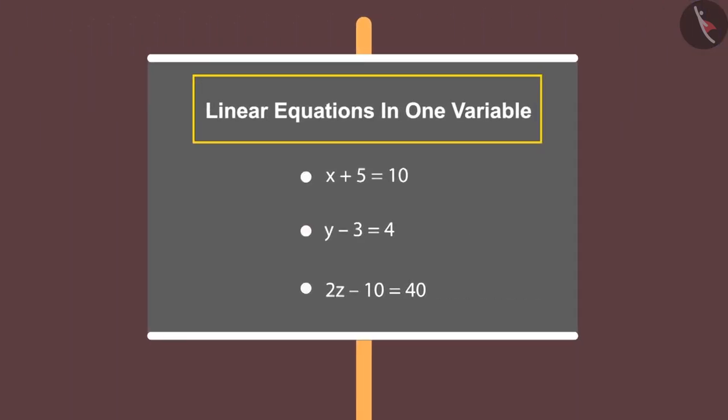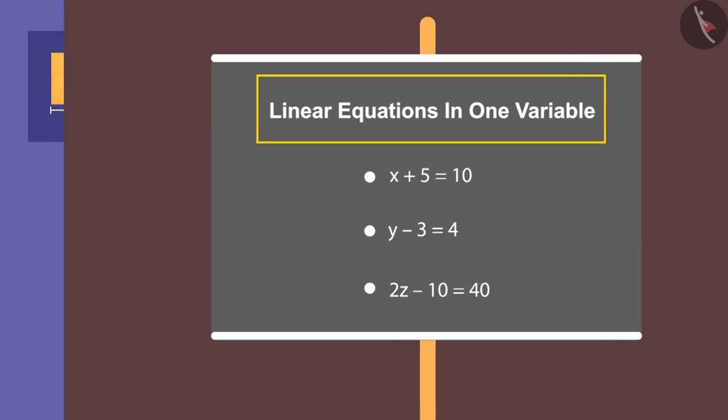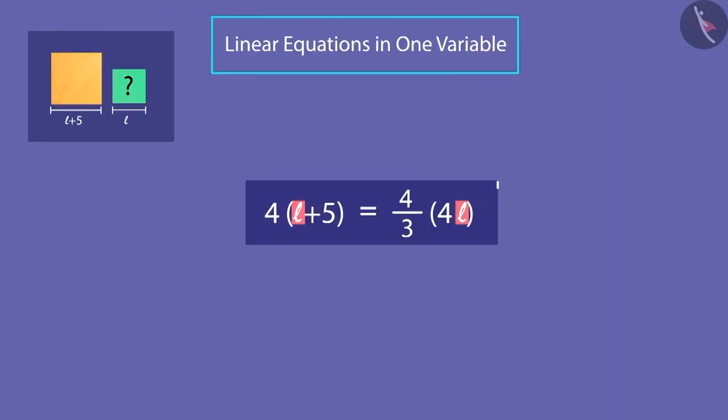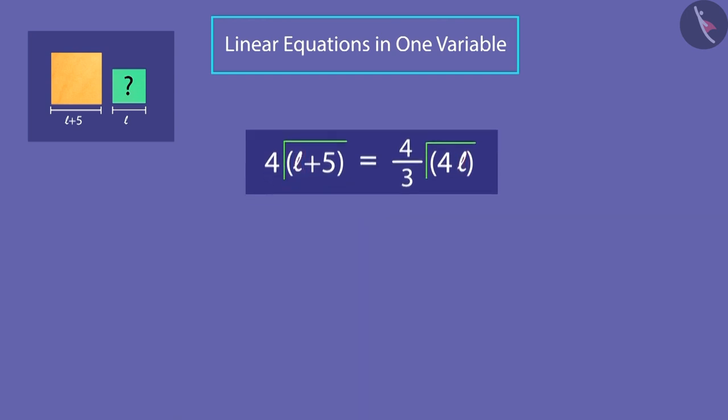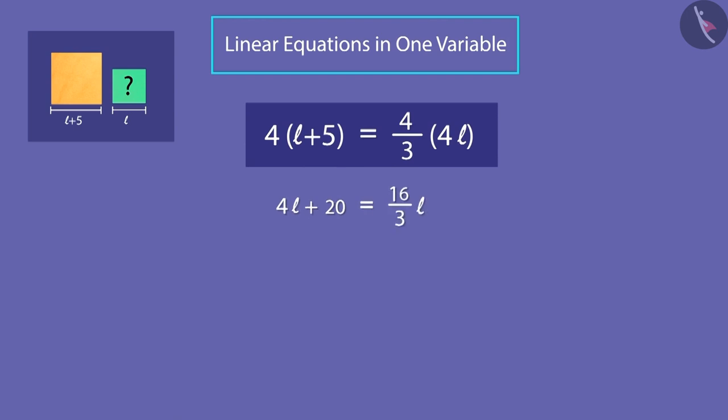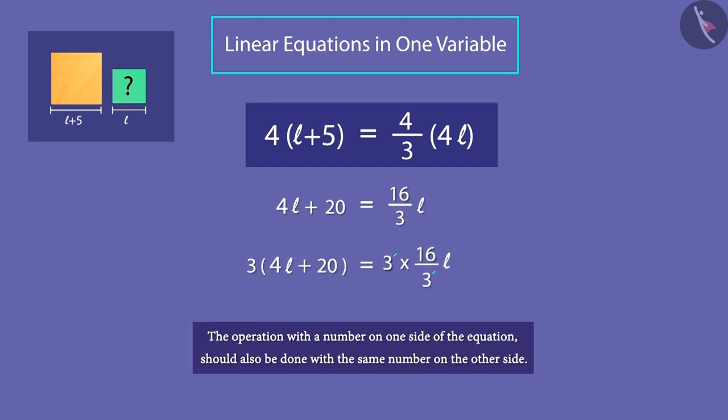Till now, we have always solved problems where the variable has been only on one side of the equation. But don't worry. Let us now resolve it together. Now, to get rid of 3, we shall multiply both sides with 3.